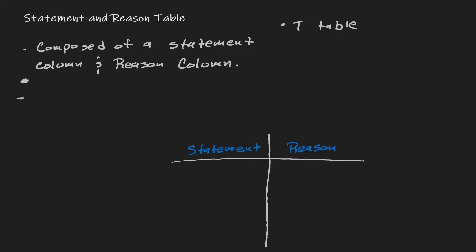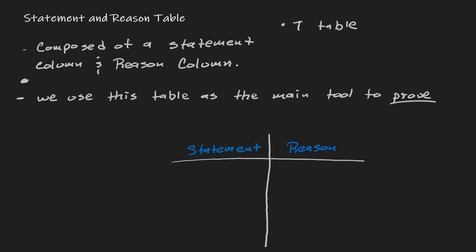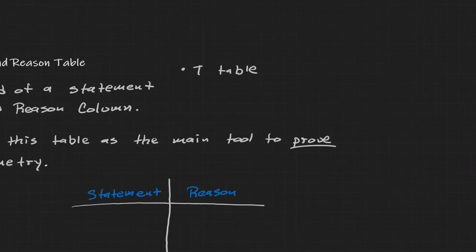Another point to consider is that we use this table as the main tool to prove statements in geometry. From here going forward, any time we see the phrase 'prove the following,' we want to think about the statement and reason table — the T-table — where on one side we have statements and on the other side we have reasons. Let's look at our first example.